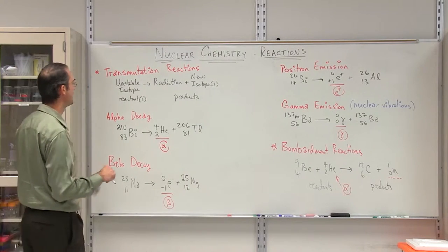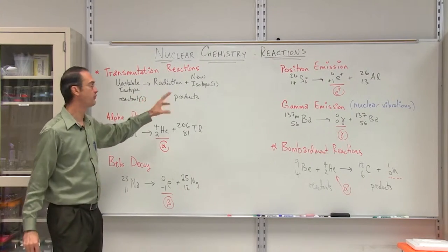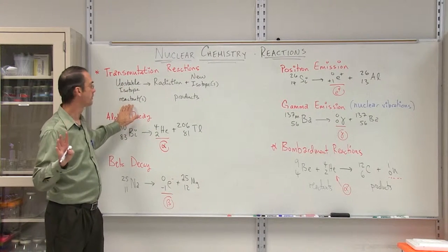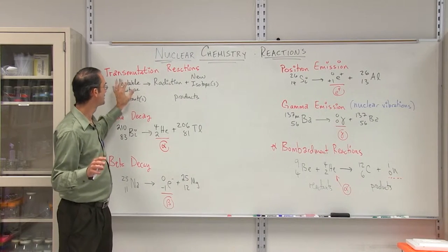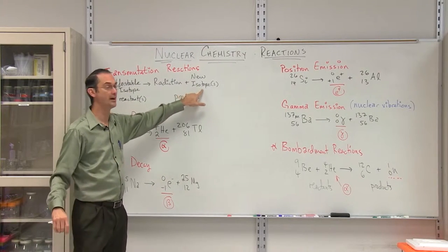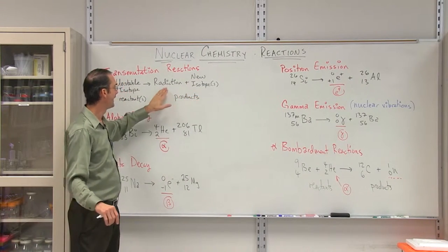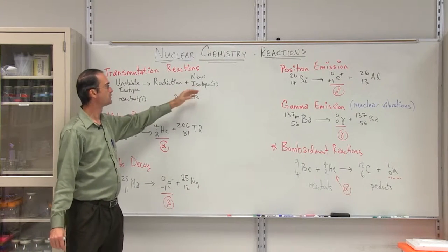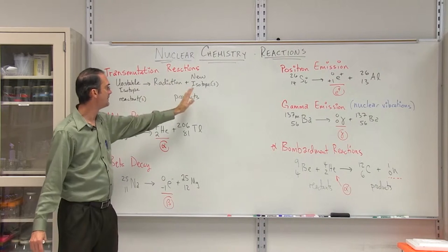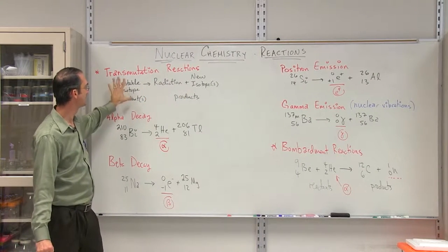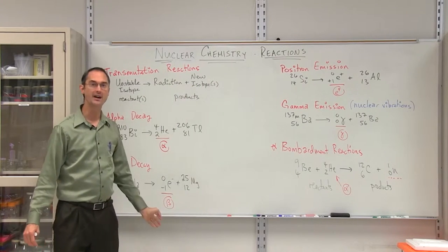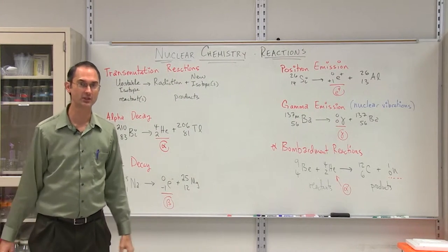First of all, transmutation reactions always take this form. They have an unstable isotope as a reactant, just like in normal chemistry, and then the unstable isotope will reduce down to a new isotope, or perhaps more than one, and some type of radiation. These then will be the products, and you will spend some of your chemistry time in balancing this. You may be told that you have an unstable isotope, and it decays by alpha decay, and you need to find out what the new isotope is by conserving mass and charge.